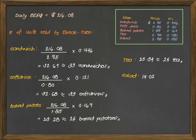And then for the salad, that's 14.02 or roughly 15 orders of salad per day. Now again, in order for the shop to break-even on a daily basis, sandwiches should be sold at 33 per day, soft drinks should be sold at 33 per day, baked potatoes should be sold at 24 units per day, and tea and salad should be sold at 24 and 15 respectively per day.